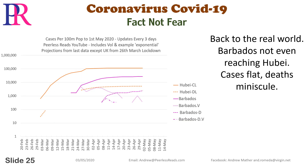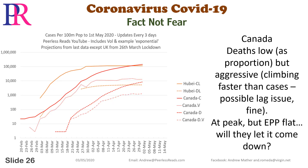Back to the real world: Barbados, not even reaching Hubei. Cases flat, deaths minuscule. Canada: deaths low as a proportion but aggressive, climbing faster than cases — possible lag issue. At peak but EPP flat — will they let it come down?